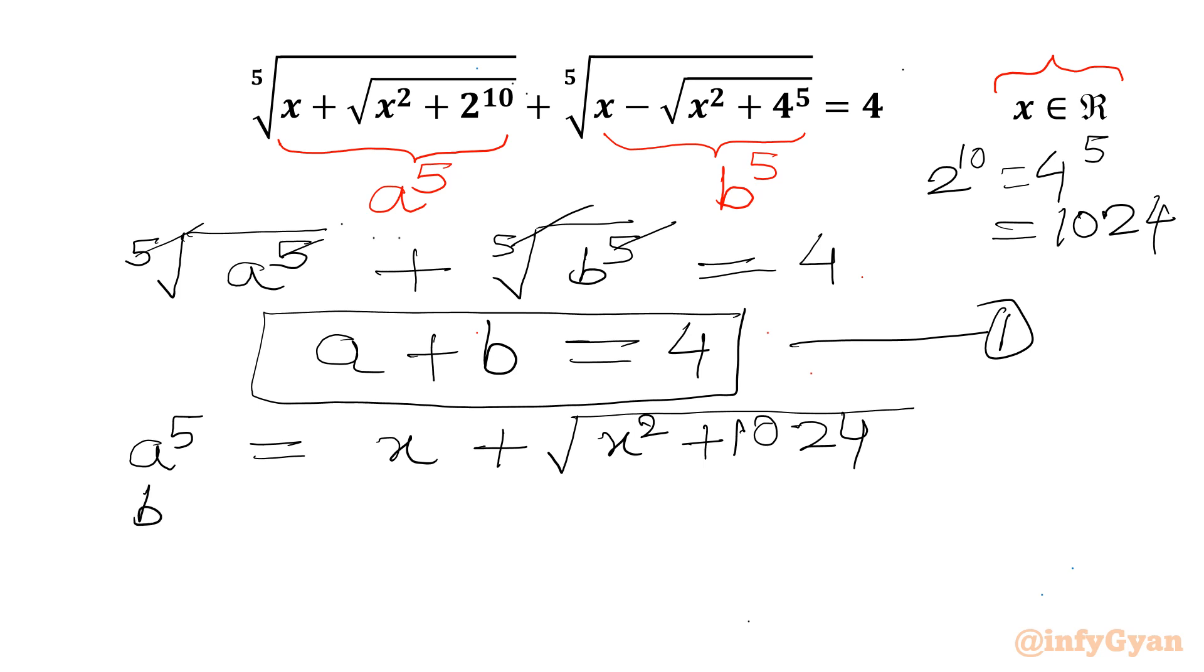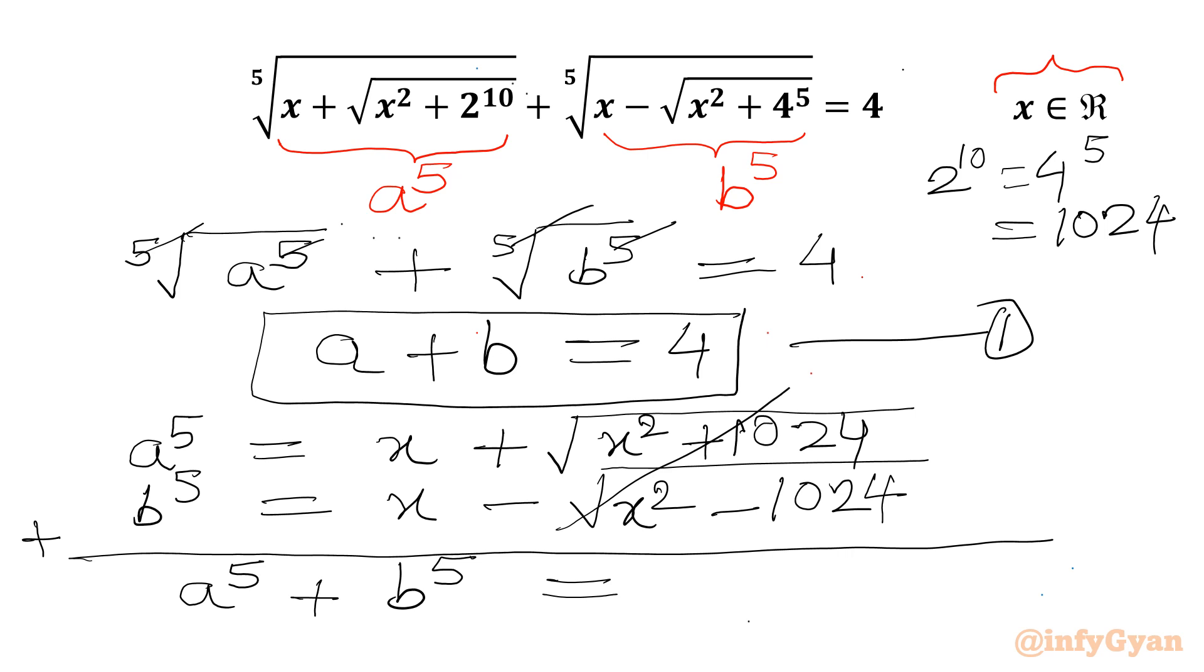Now I will be writing b power 5. This is equal to x minus square root of x square minus 1024. Let's add both the equations. So we will be getting a power 5 plus b power 5 equal to these two will be over x plus x. We can write 2x. This is our equation number 2.